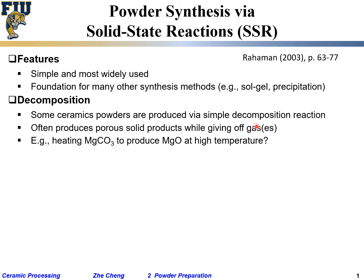One example: heating magnesium carbonate (MgCO₃) at high temperature causes decomposition to produce magnesium oxide (MgO). But you have to add carbon dioxide (CO₂) on the other side. The reaction must be balanced — mass, charge, everything has to make sense. That's just one simple decomposition example.